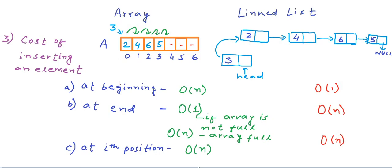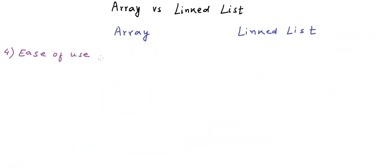Deleting an element also has the same three scenarios and the time complexity for deletion is the same as for insertion. The final parameter is ease of use and implementation. Arrays are definitely a lot easier to use. Linked list implementation, especially in C or C++, is more prone to errors like segmentation fault and memory leak, and requires good care. In our next lesson, we will implement linked list in C or C++ with some real code. Thanks for watching.